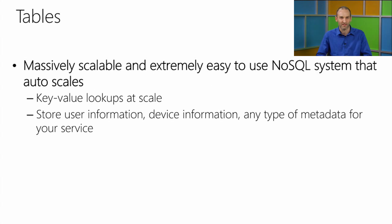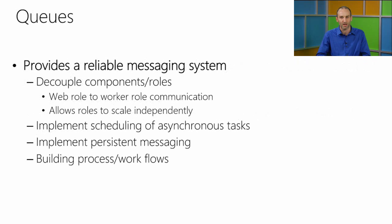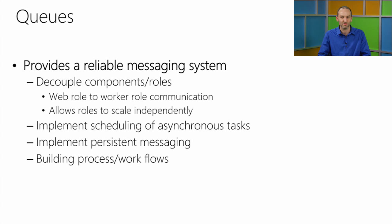Tables are a massively scalable and easy-to-use NoSQL system — basically a key-value store where values can be a variety of data types. You can store user information, devices, metadata for your service, and all sorts of things. Queues provide a reliable messaging system that lets you decouple one part of your service from another, allowing your roles to scale independently. They allow you to schedule things asynchronously and implement persistent messaging or build workflow on top of that.